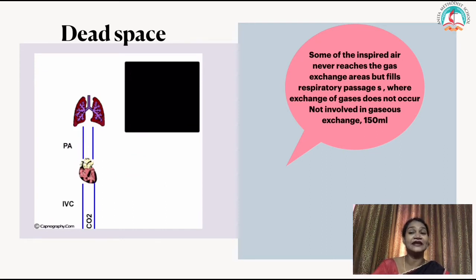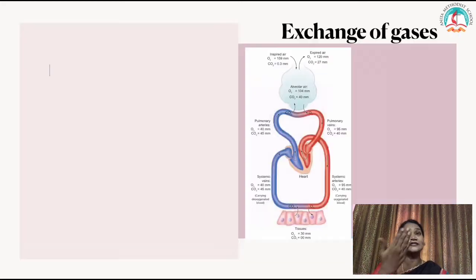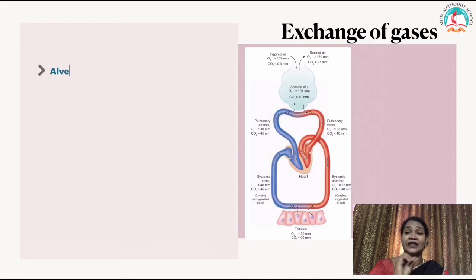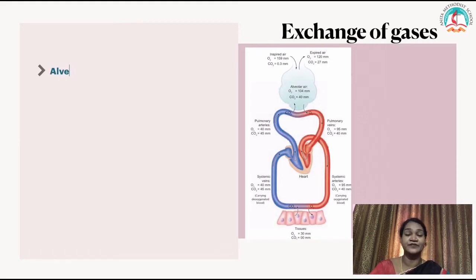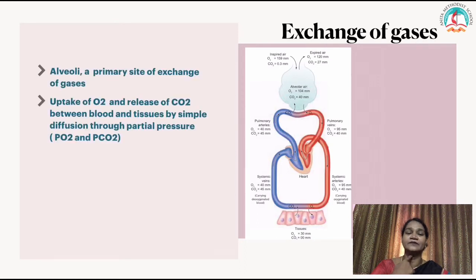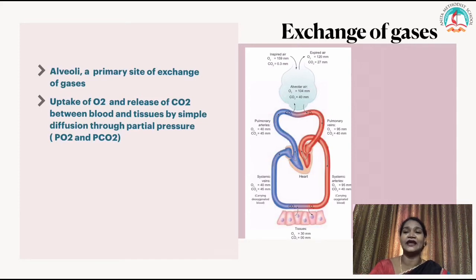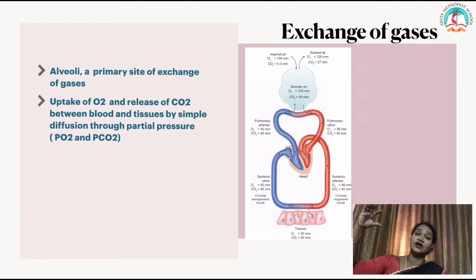Now let us see the exchange of gases. We inhale oxygen and exhale carbon dioxide. The alveoli — of which there are millions in each lung — are the primary site of gas exchange. Oxygen reaches the alveoli through the nostrils, trachea, bronchi, and bronchioles. The uptake of oxygen and release of carbon dioxide between blood and tissues occurs by simple diffusion — the movement of gas from higher to lower concentration through partial pressure.